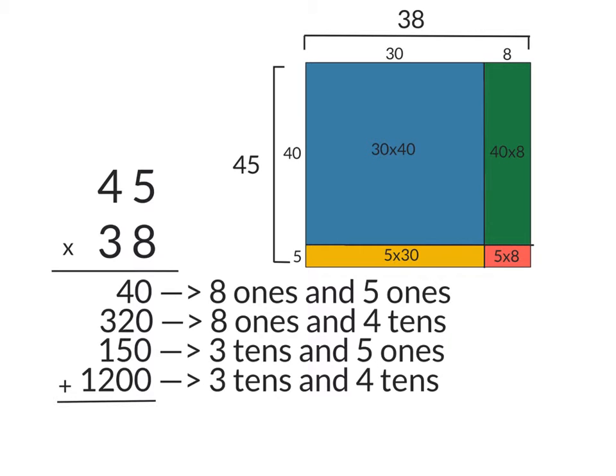Now we're going to multiply the 8 times this 4, which is in the 10's place, which makes it a 40. 8 times 40 gives us 320. Now we multiplied the 8 by the 40 and the 5, so now we're going to move on to this 30.